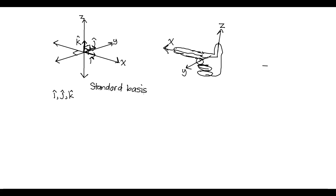These are unit vectors because they all have magnitude 1. If we take the dot product of i and j, j and k, k and i, or any combination, then because all of them are orthogonal — orthogonal just means perpendicular — the cosine of the angle between them is zero, since cosine of 90° is zero. We can represent all vectors as a vector sum of multiples of i and j.